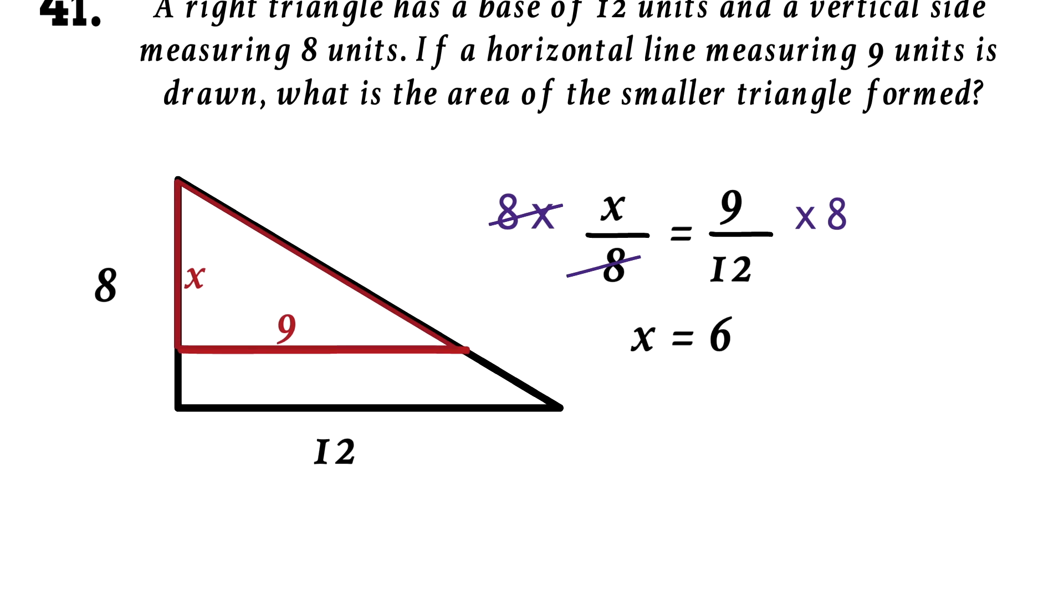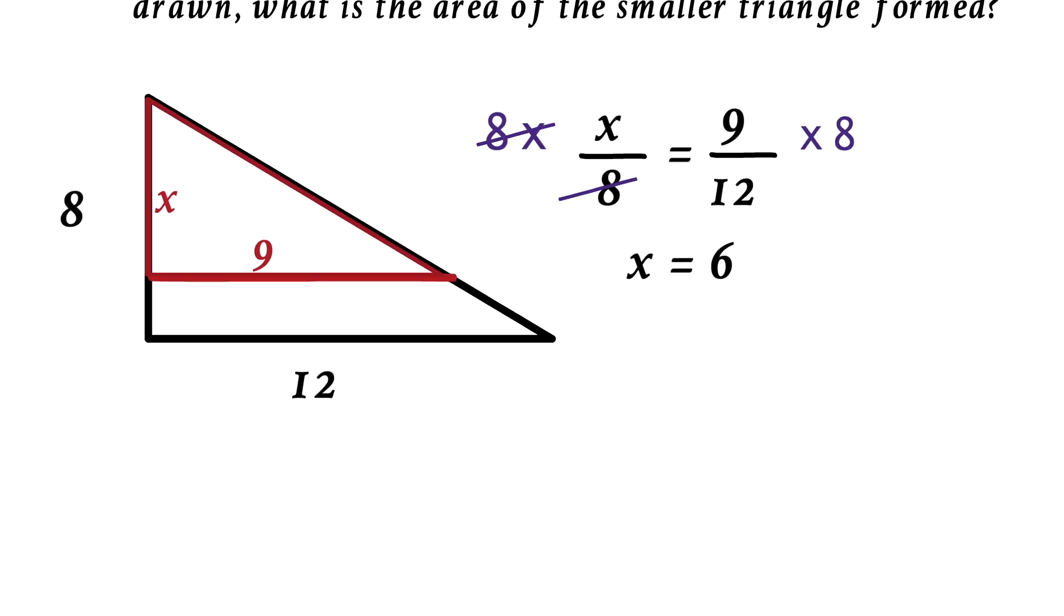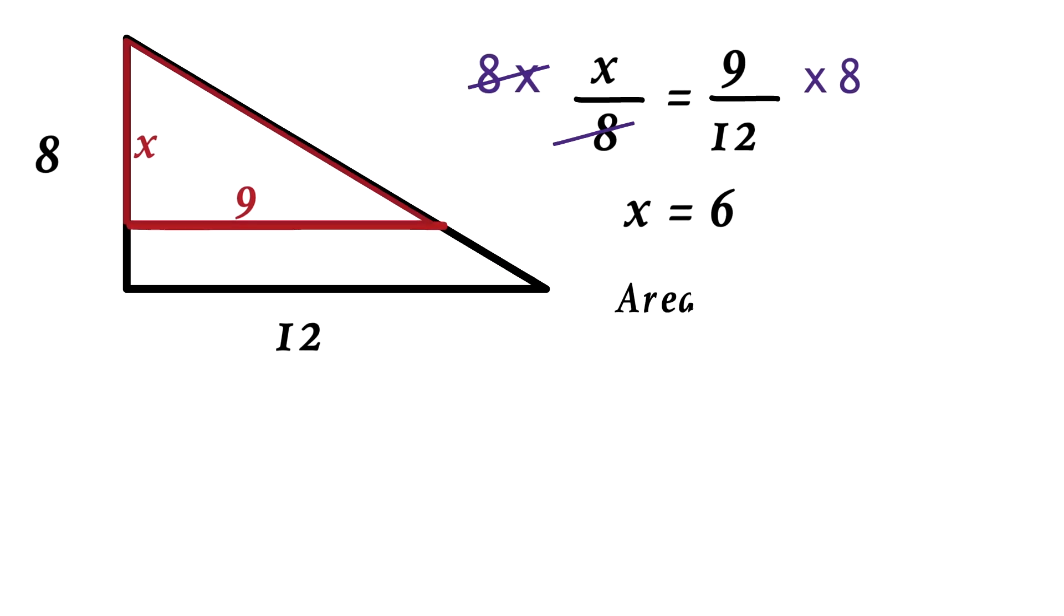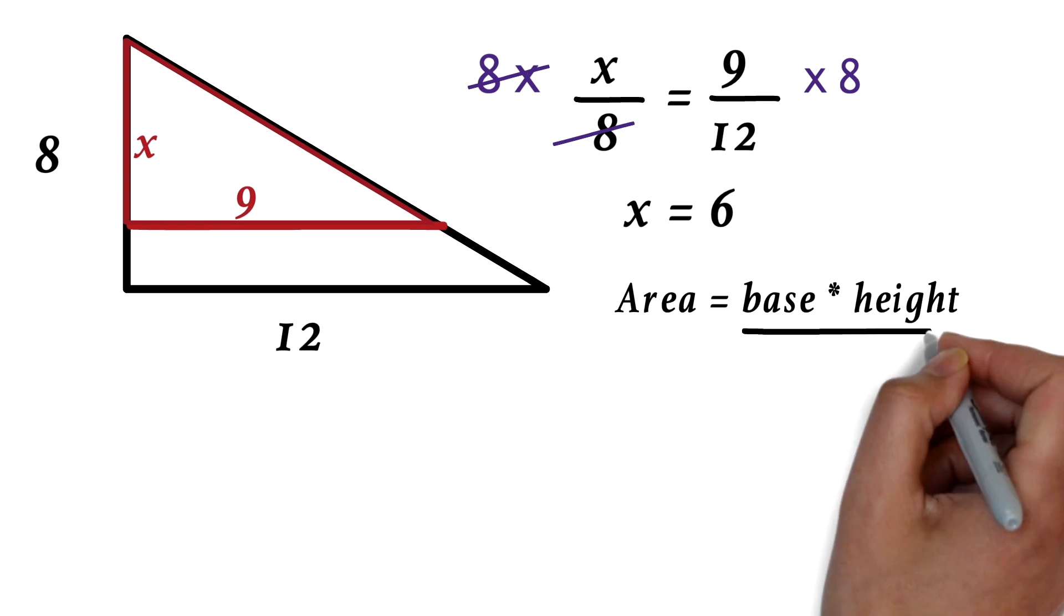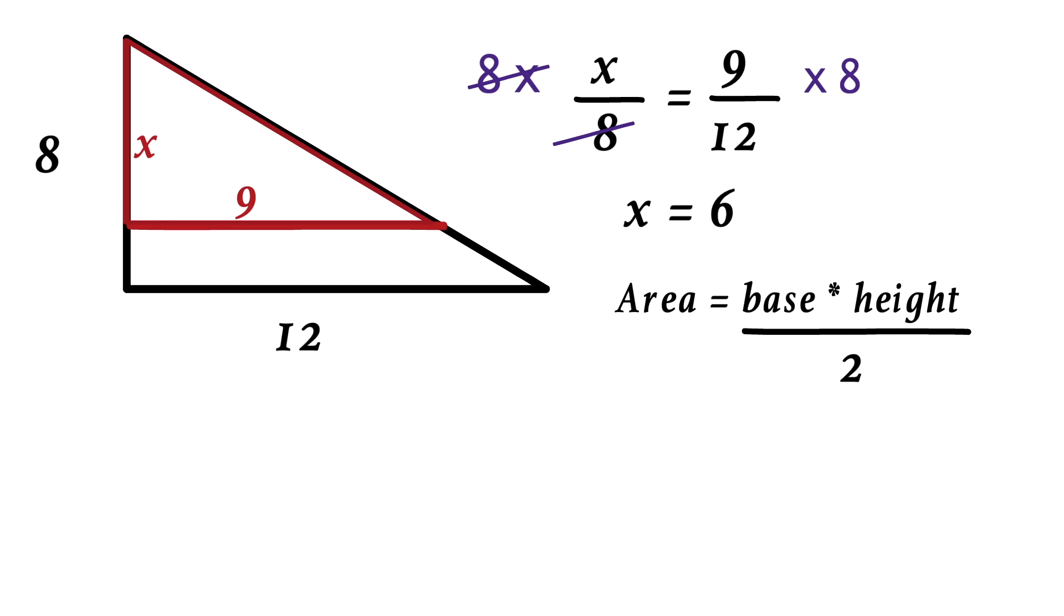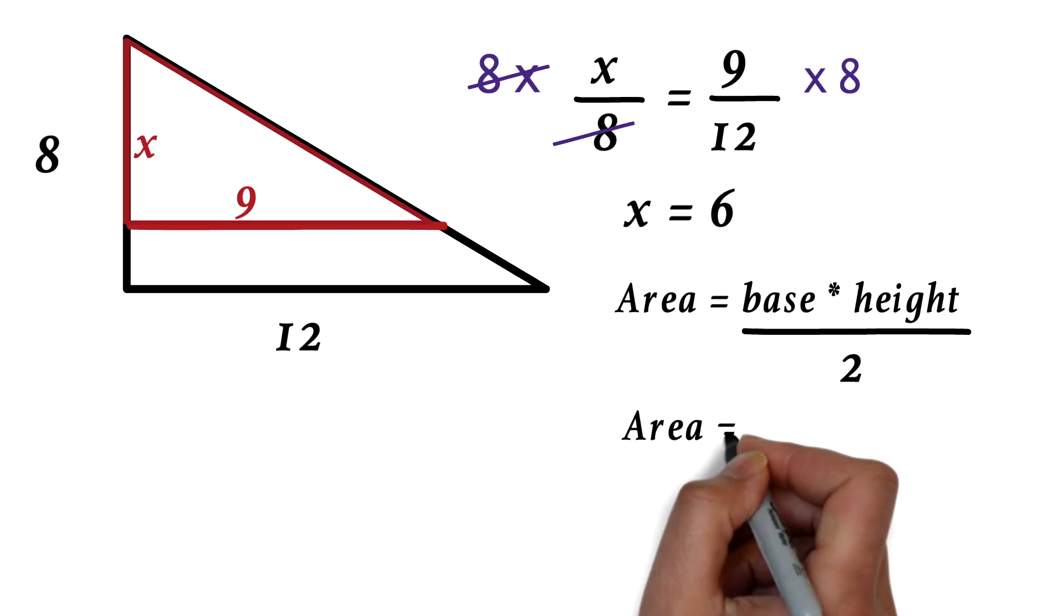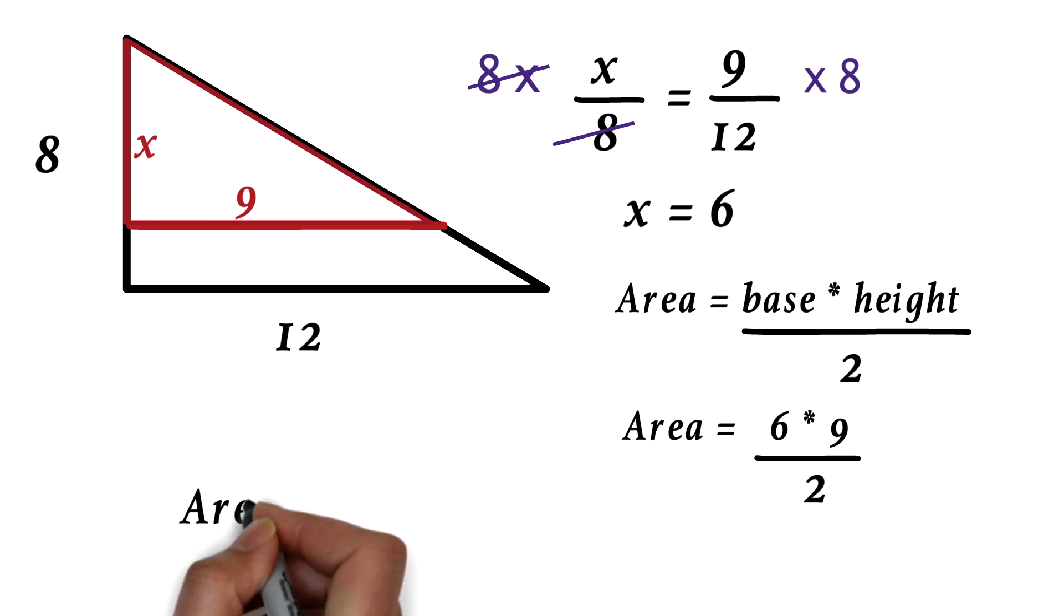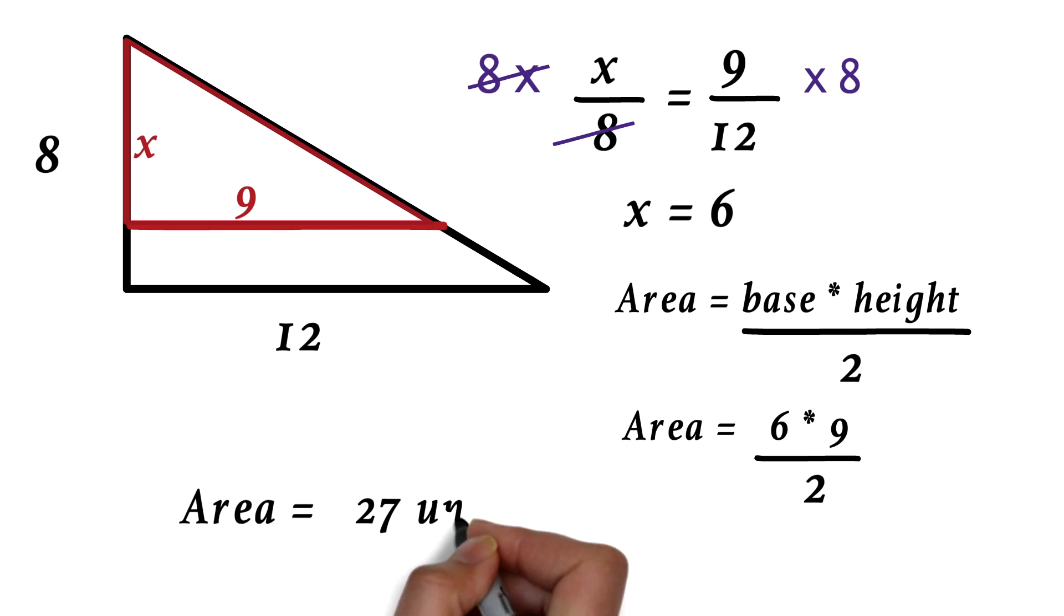But that's not what the question is asking. It's asking us to find the area. Area of a triangle is 1 half base times height, or simply put, base times height over 2. This formula will be given on the GED test, so don't worry about it. So the area of the smaller triangle is 6 times 9 over 2. Work it out. This will give us an area of 27 units squared.